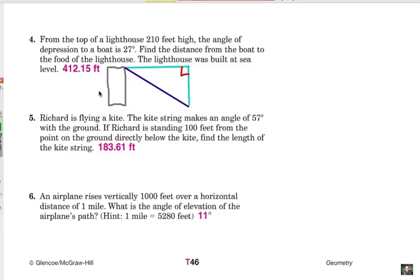From the top of a lighthouse, 210 feet high. Alright, if I label this 210 feet high, notice that as I look at this as a right triangle, that's also this leg here. We can kind of think of it as two separate right triangles that are the same. The angle of depression to a boat is 27 degrees.